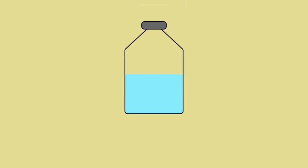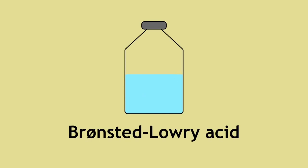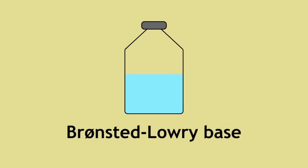A Bronsted-Lowry acid is a substance that releases or donates protons in solution. In our case, hydrogen chloride. A Bronsted-Lowry base is a substance that accepts protons in solution. In our case, water.